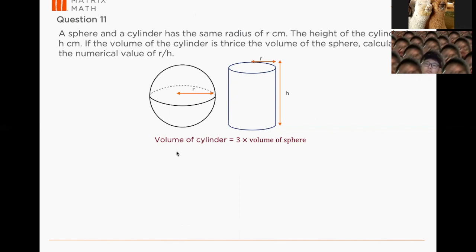So first thing, volume of sphere - what is the formula? So volume of sphere will be πr²h. Sorry, volume of cylinder is πr²h. So volume of cylinder equals 3 times volume of sphere. So πr²h is the volume of cylinder, and then volume of sphere will be 4/3 πr³, and you have 3 times.